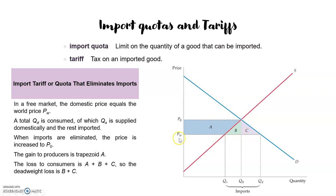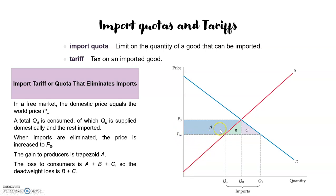Why? Because when the market is open to the world, the new price will be Pw, and at this price the consumer surplus will be the area above Pw and below the demand. At quantity QD it will be this entire triangle. So the consumers, compared to the situation with a closed market, will earn A, B, and C when we have an open market with no restriction, no regulation, no tariffs, and no import quotas. And in this situation the producer will be worse off, because at this lower price they will only earn the small triangle below Pw and above the supply — so they will lose A.